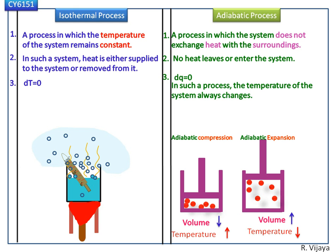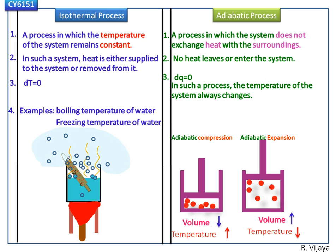In adiabatic process, the temperature of the system always changes. In adiabatic compression, the temperature increases; in adiabatic expansion, the temperature decreases. Examples of isothermal process are the boiling temperature of water, freezing temperature of water, etc.